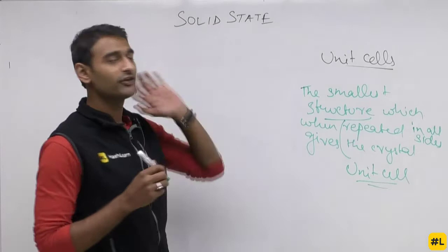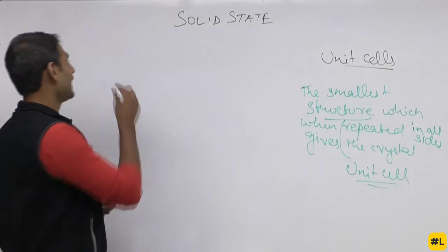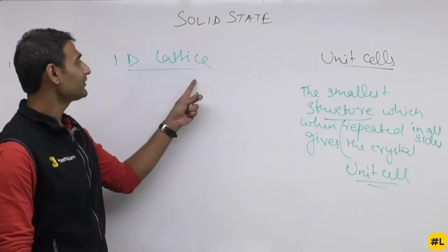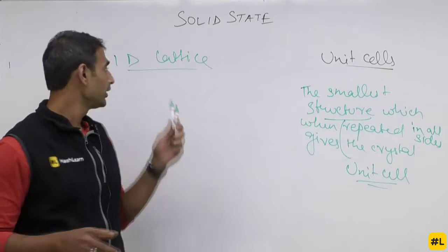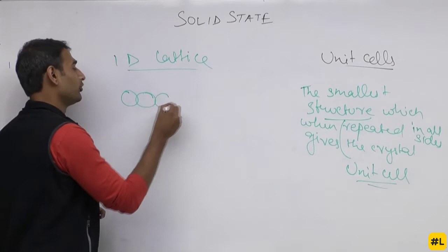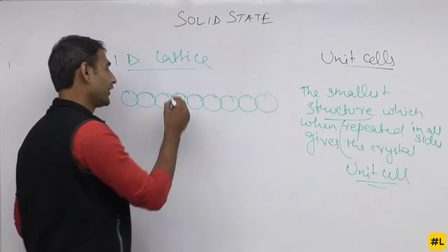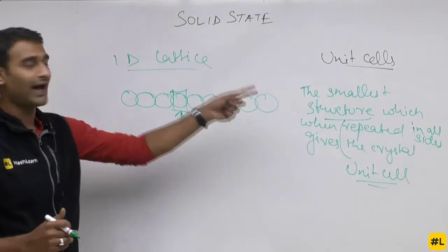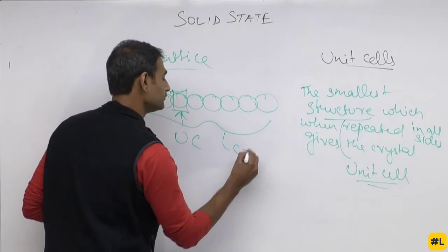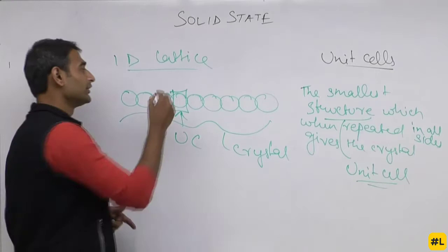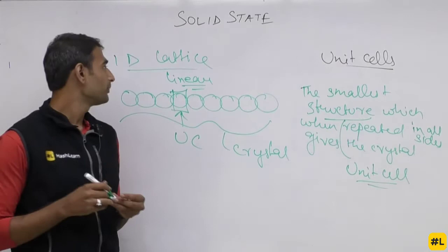Now what do we mean by a 1D lattice? Lattice means structure, so a structure that exists in only one dimension is called a 1D lattice. For example, a linear arrangement of atoms — this entire thing is the crystal, one repeating unit is the unit cell, and the structure is linear. I hope 1D lattice is very simple and everyone has understood.